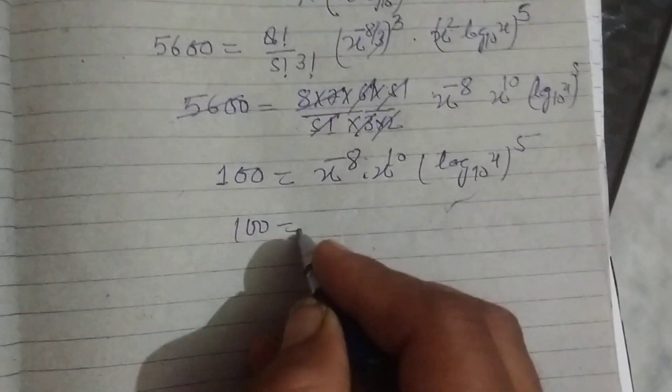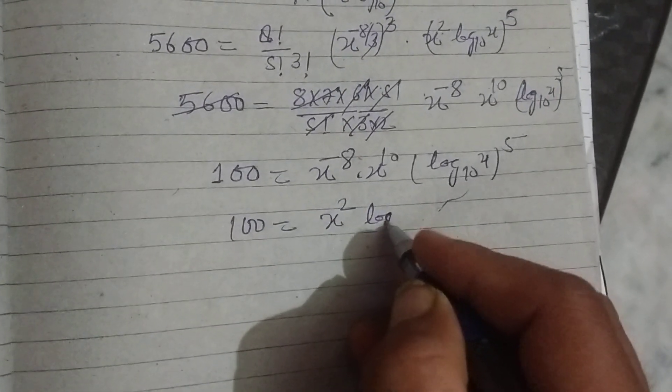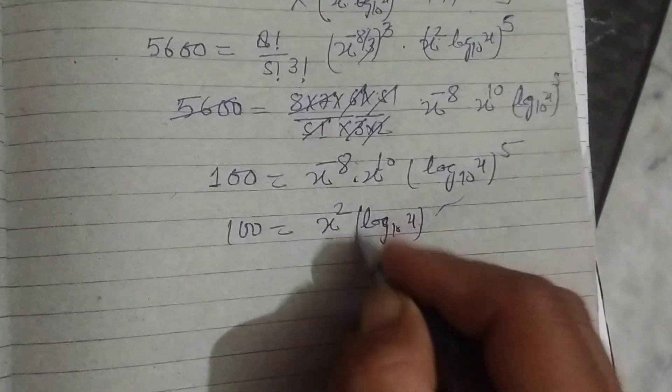So this will be 100 equals x^(2 log₁₀(x))^5.